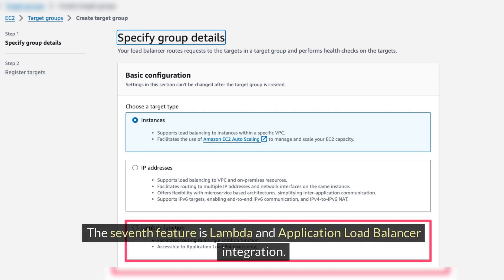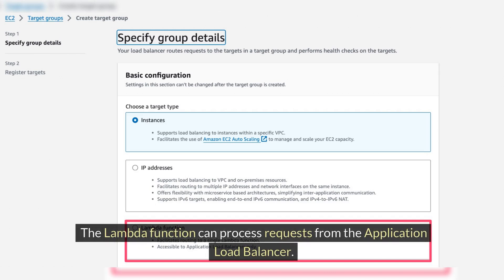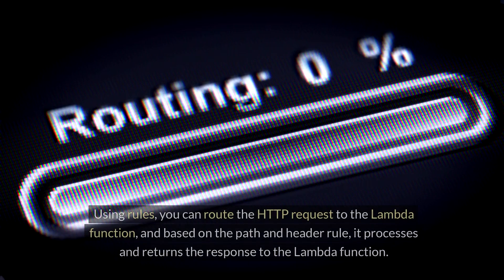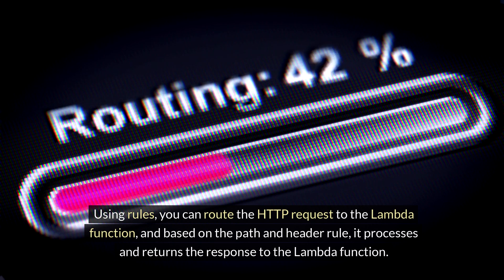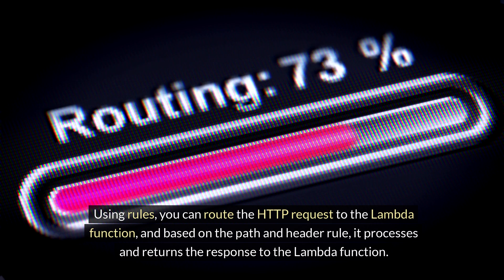The seventh feature is Lambda's Application Load Balancer integration. The Lambda function can process requests from the Application Load Balancer. Using rules, you can route HTTP requests to the Lambda function, and based on the path and header rules, it processes and returns the response.